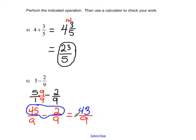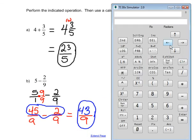So 43 ninths. And that doesn't have any common factors between 43 and 9. So that would be our final answer. Let's go ahead and take a look at our calculator and just double check our work. So the first problem that we did, we did 4 plus 3 fifths. So 4 plus 3 fraction key 5.